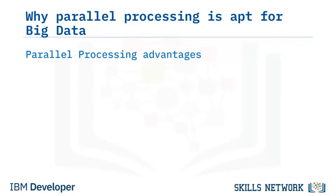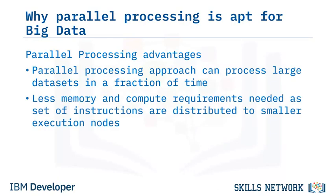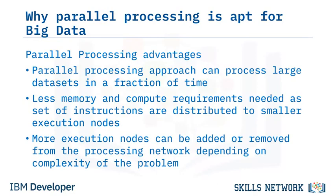Some of the other benefits of using parallel processing are: reduced processing times — parallel processing can process Big Data at a fraction of the time compared to linear processing; less memory and processing requirements — since the problem instructions are executed on separate execution nodes, memory and processing requirements are low even while processing large volumes of data; and flexibility — execution nodes can be added and removed as and when required, which significantly reduces infrastructure cost.